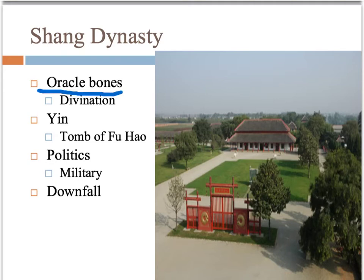Divination is essentially what we call fortune telling or predicting the future. With oracle bones, they would take the bones of an ox or a turtle and ask certain questions to their ancestors or gods — should we go to war, what will the weather be like. They would carve the question and the reader's name into the bone, then heat it up against a hot piece of metal until it split. They'd read the lines from how the bone split — it's kind of like a palm reading today. If the reading came true, they would inscribe it later. If not, they'd probably throw it in a ditch. Historians have since been able to read these oracle bones and learn a ton about the ancient Chinese civilization.